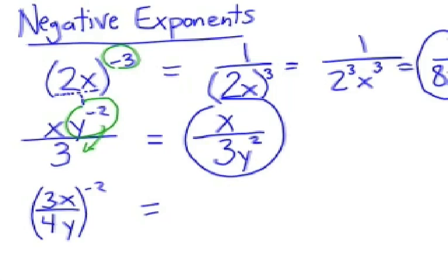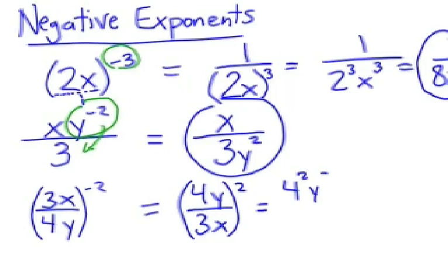So, we would have 4y on the top and 3x on the bottom, and all of that is now raised to the second power, which would be 4 squared y squared on the top and 3 squared x squared on the bottom.